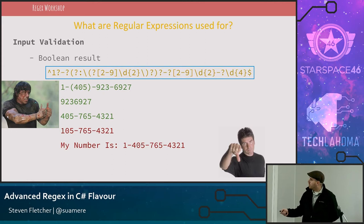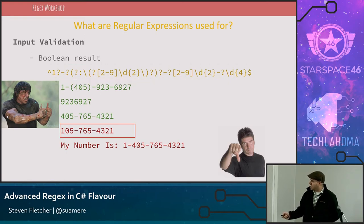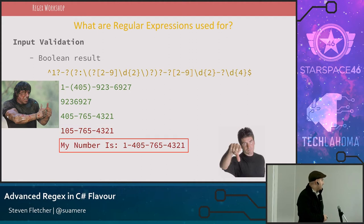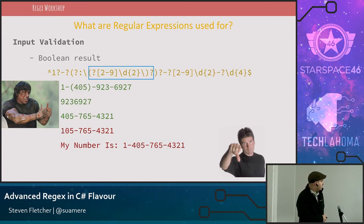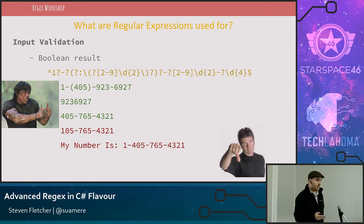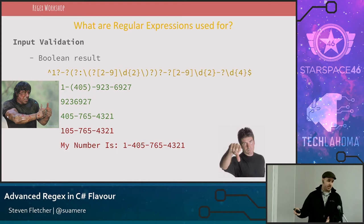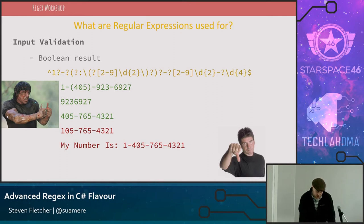In this example I have a phone number regular expression that will match these three phone number types. It will not match this phone number because the area code begins with a 1, and it will not match this one because it has extra text in it. One way you might see regular expressions used is with capture groups around the area code and the rest of the phone number to separate them out. But if you have a business rule saying to separate those out, maybe you should just give the user separate inputs. You'd separate it out — you wouldn't even need a regular expression. You just need length-of-3 for the area code and length-of-7 for the phone number. You probably shouldn't be using capture groups in input validation.